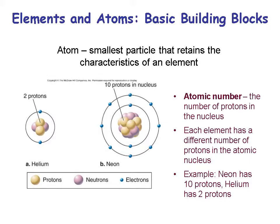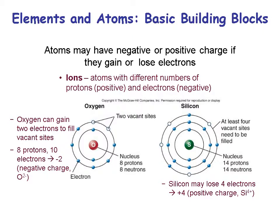An ion is an atom with a different number of protons and electrons. Oxygen has two vacant sites because the outer electron shell has space for two extra electrons. Silicon has space for four extra electrons — just like parking spaces outside the silicon atom.